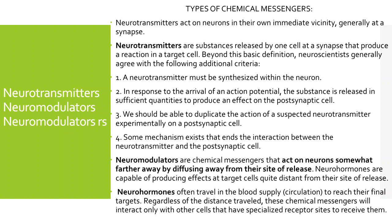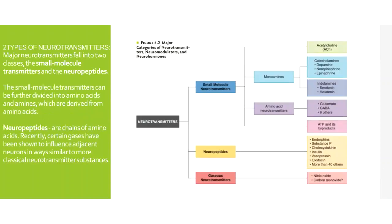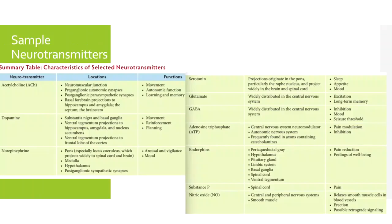We have here the different types of neurotransmitters — you can see the categories of neurotransmitters, neuromodulators, and hormones. Here are some sample neurotransmitters: acetylcholine, dopamine, norepinephrine, serotonin, glutamate, GABA, ATP, endorphins, and so on.